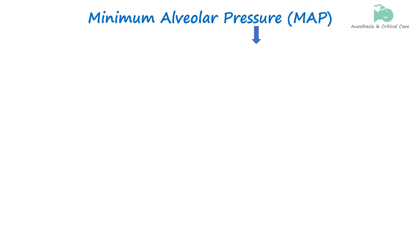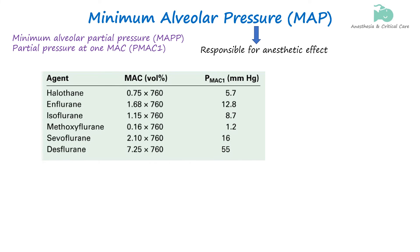We have repeatedly stressed that the partial pressure of the anesthetic in the central nervous system is responsible for the anesthetic effect. So one should also think of MAC in terms of partial pressure and not only volume percent. Terms like minimum alveolar pressure, minimum alveolar partial pressure, and partial pressure at 1 MAC are used to describe this. For instance, 1 MAC of isoflurane is equivalent to a PMAC1 of 8.7 mmHg.